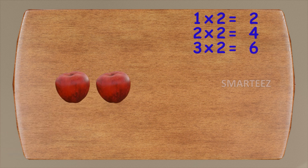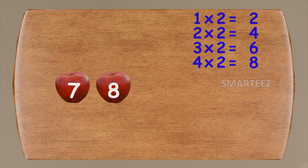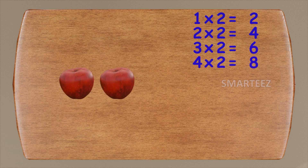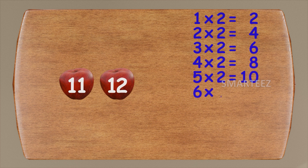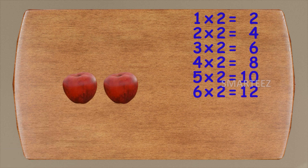Let's add two more. We had six earlier. This will be seven and eight. Four times two is eight. Let's add two more. We had eight earlier. This will be nine and ten. Five times two is ten. Let's add two more. This will be eleven and twelve. Six times two is twelve. Let's add two more — that will be thirteen and fourteen. Seven times two is fourteen.